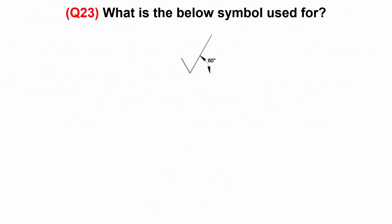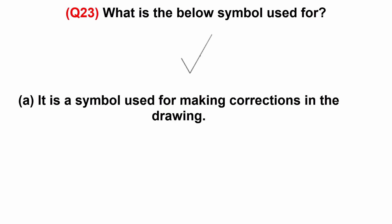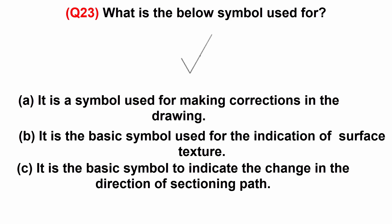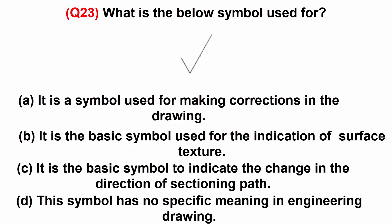What is the below symbol used for? A: it is a symbol used for making corrections in the drawing. B: it is the basic symbol used for the indication of surface texture. C: it is the basic symbol to indicate the change in the direction of sectioning path. Or D: this symbol has no specific meaning in engineering drawing.